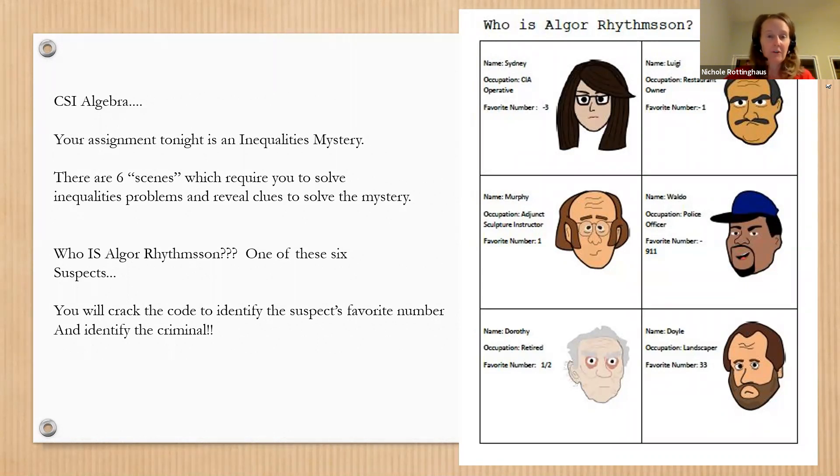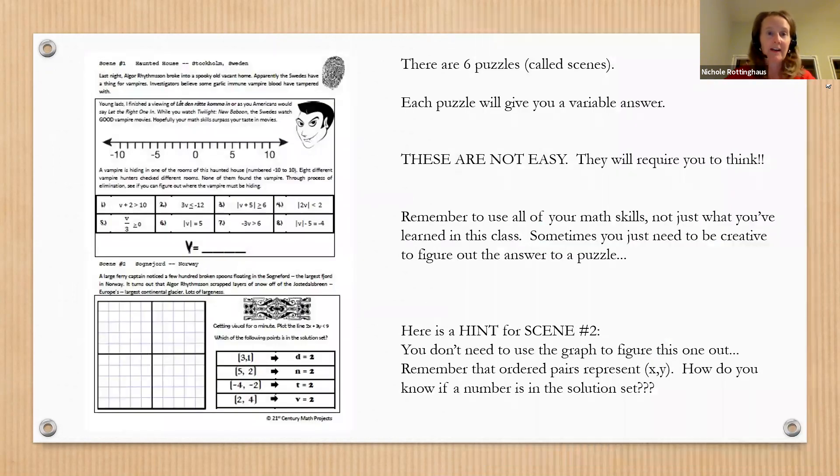You're going to do that by solving some problems to figure out what the person's favorite number is. When you get to the end of all of this, you're going to come up with one number and that number will identify which of these six suspects is guilty of the crime. So there are six puzzles that you have to solve and each puzzle comes up with an answer that's a variable.